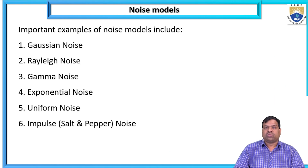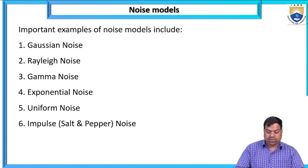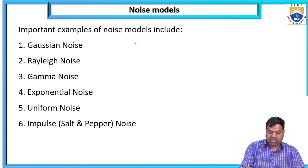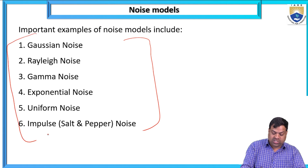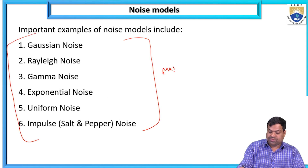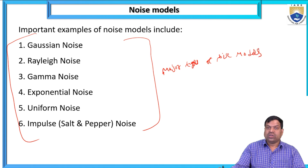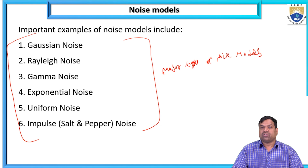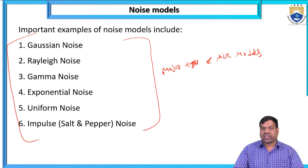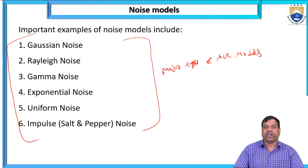Major examples of noise models include Gaussian noise, Rayleigh noise, gamma noise, exponential noise, uniform noise, and impulse (salt and pepper) noise. These are the major noise models included in image processing.